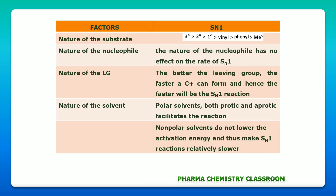To summarize: nature of the substrate — tertiary alkyl halides undergo reaction fastest. Nature of the nucleophile — the nucleophile has no effect on the rate of SN1 reaction; the rate-limiting step is carbocation formation and rate is directly proportional to the concentration of the substrate. Nature of the leaving group — the better the leaving group, the faster the carbocation forms and the faster the SN1 reaction. Nature of the solvent — polar solvents, both protic and aprotic, stabilize the carbocation and reduce activation energy; non-polar solvents do not lower activation energy, making SN1 reaction relatively slower.